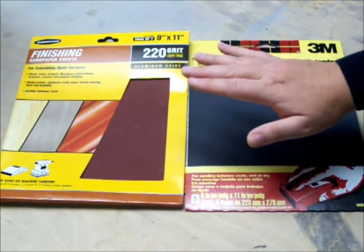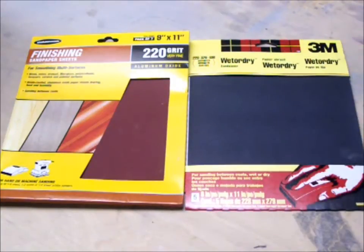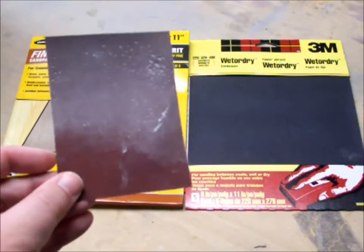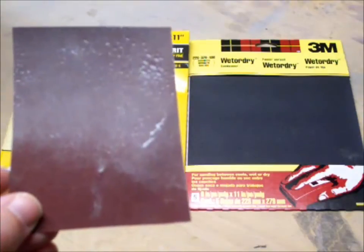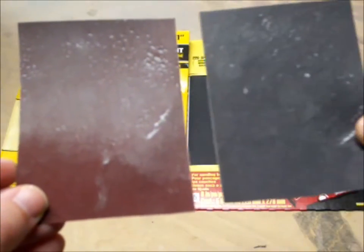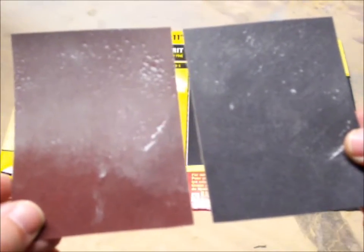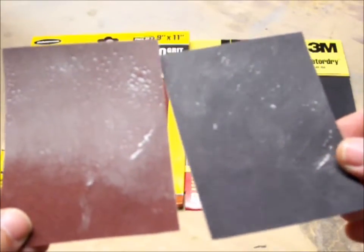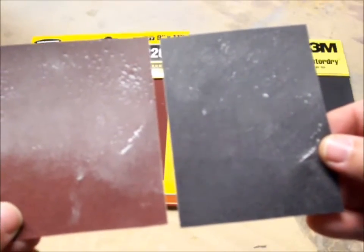Cheap sandpaper will gum up a lot more than the more expensive will. Let me show this to you. I'm going to hold up two samples. On the left here is the cheap sandpaper and you can see the spots on it. And on the right is the more expensive sandpaper. Both of these sheets were sanded on separate spots for 25 strokes and you can see the difference. So it really does make a difference when you buy the proper tools.